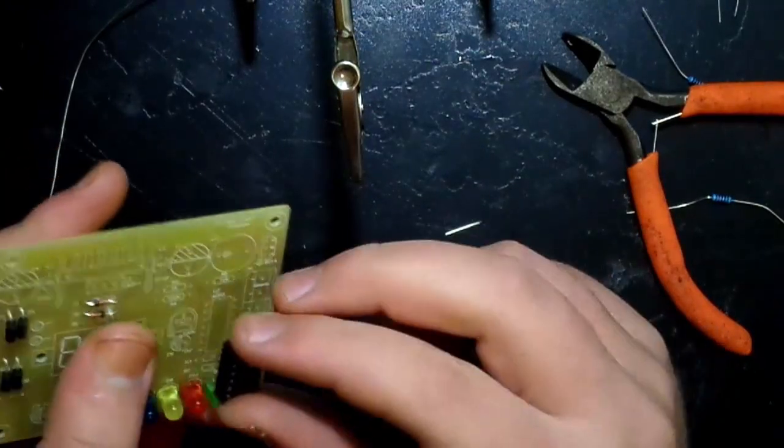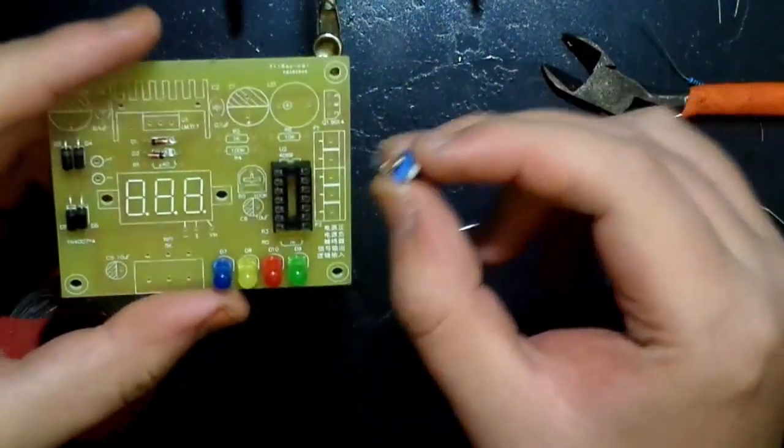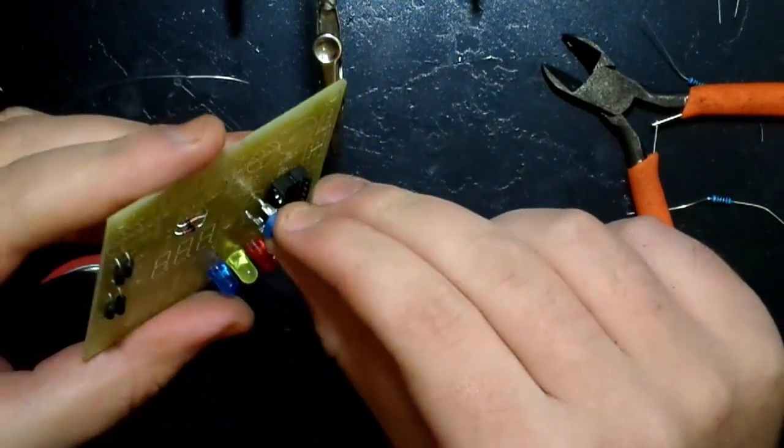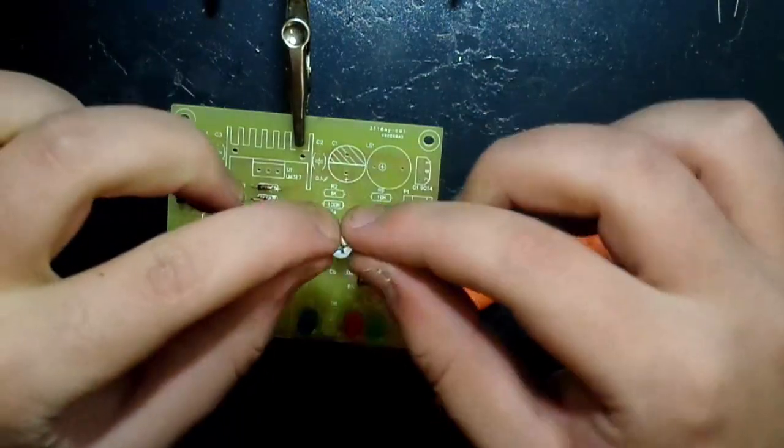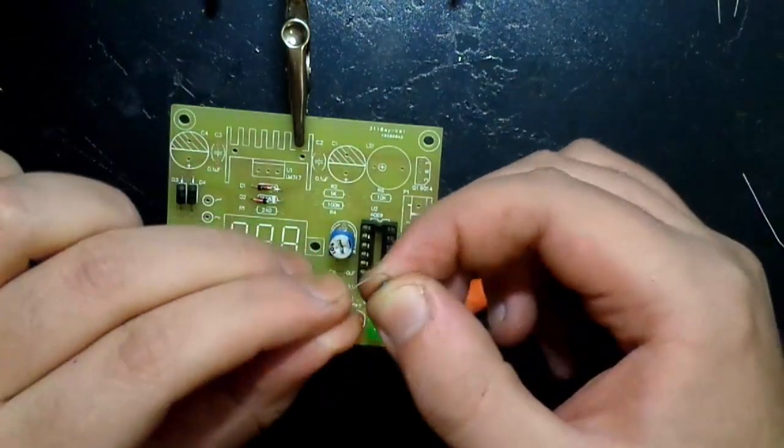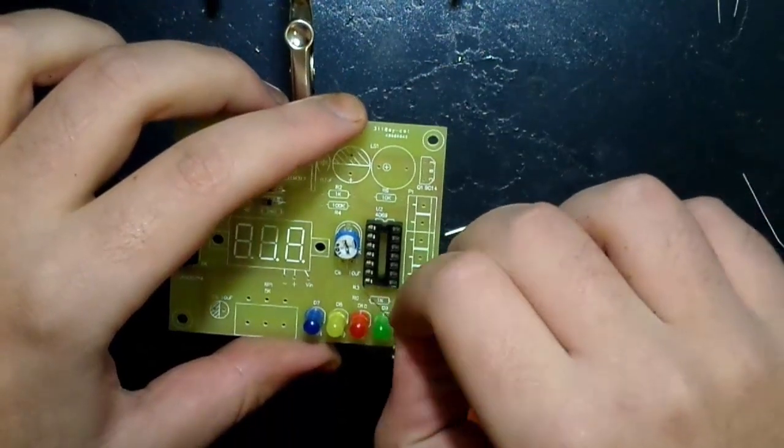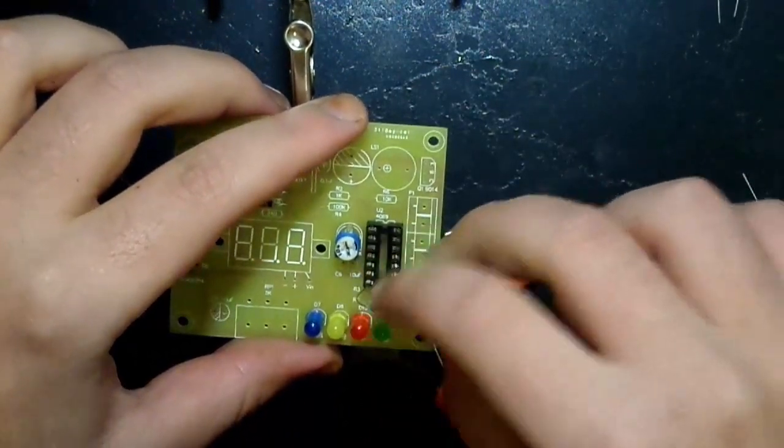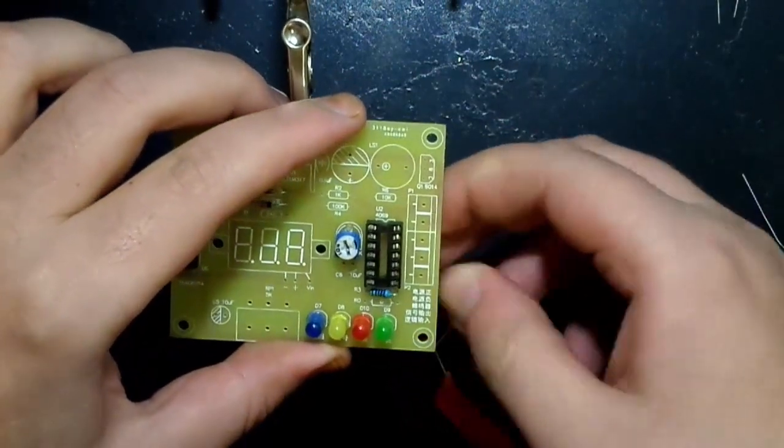Next up is the IC's header. Note where the notch is on top. Now the small 100k potentiometer. Now the resistors. Polarity is not an issue with them. So you can put them either way around. But you must make sure that you're putting the correct resistors into the correct places.